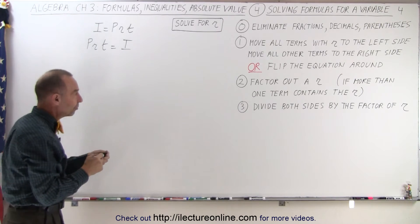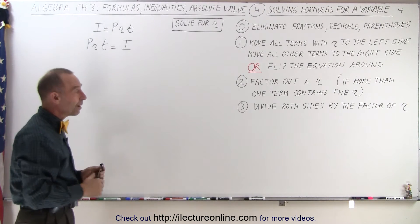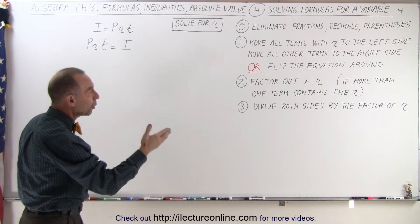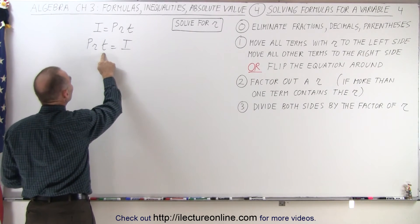The next step is to factor out an R if there's more than one term with an R in it, but we don't have that, so we can skip that step. And finally, divide both sides by the factor of R. The product of P times T are the factor.